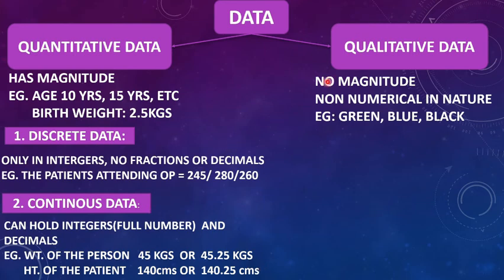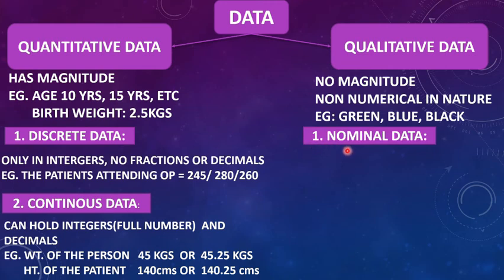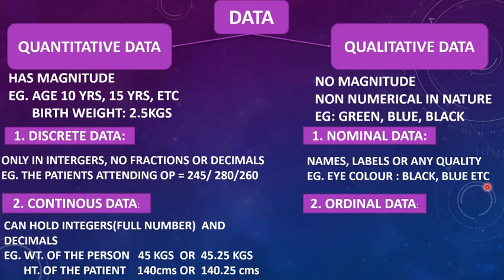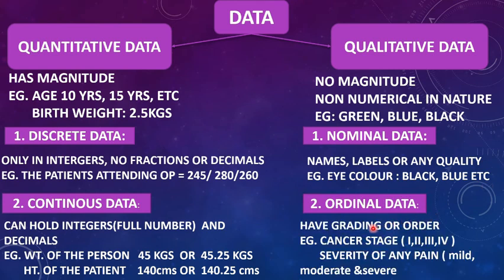Qualitative data can also be divided into two types. The first is nominal — as the name suggests, names, labels, or any quality comes under nominal data. Example: eye color — black, blue, etc. The second type of qualitative data is ordinal. Categories which have gradings fall under this group. For example, cancer stage has four gradings: stage one, stage two, stage three, stage four. And the severity of pain has three gradings: mild, moderate, severe. All those which have gradings come under ordinal data.